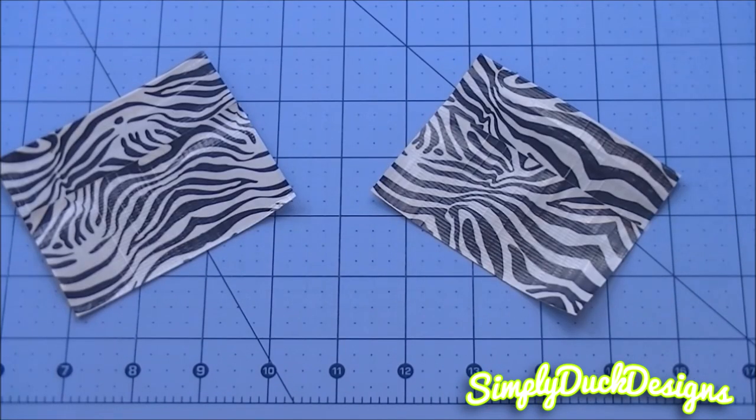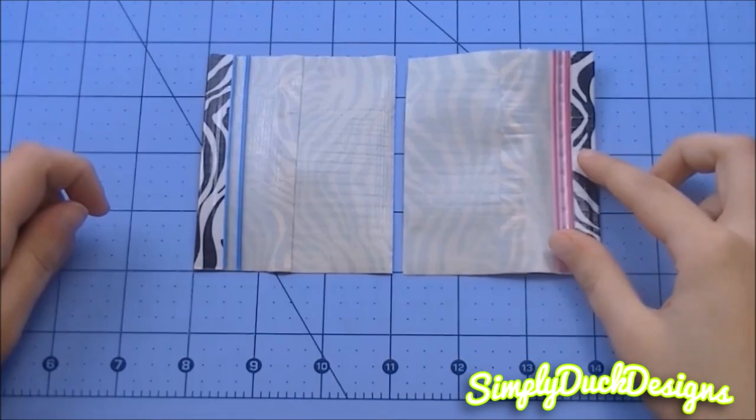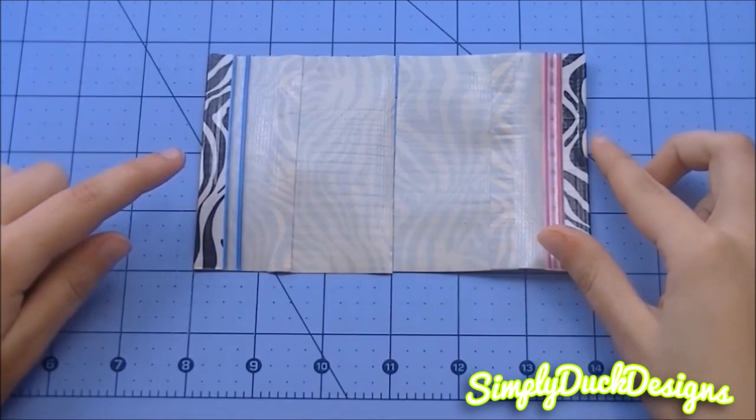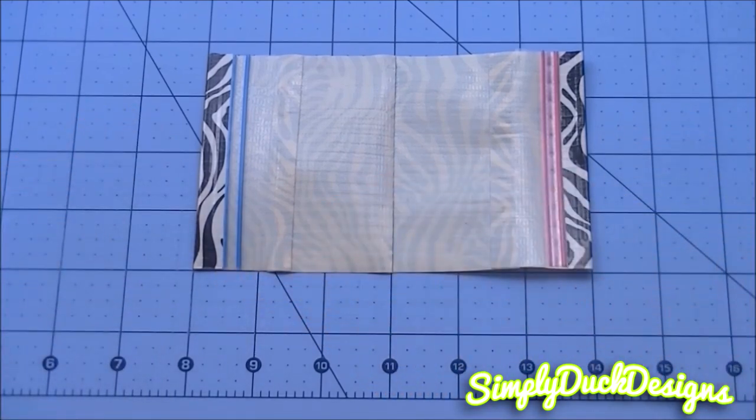Now that you have your two pieces done, what we're going to do is we're going to flip these over. And you want to line them up together that they're barely even touching. You just want to make sure that they are 6 inches long together.